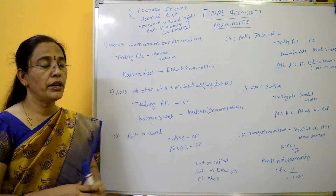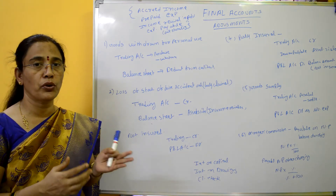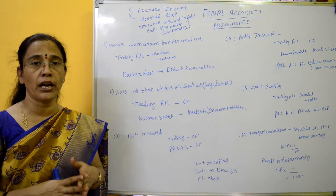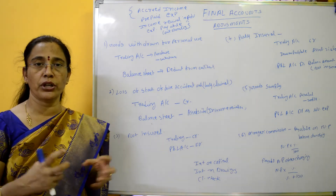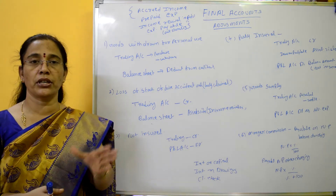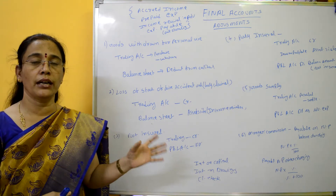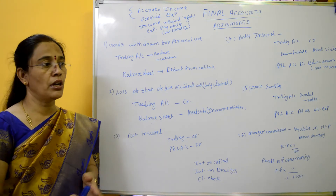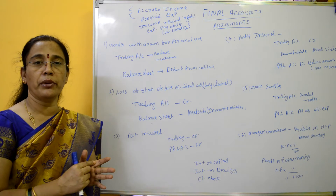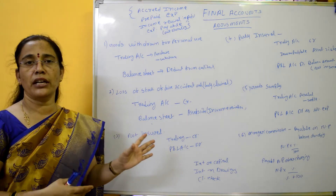Next is manager's commission, payable on profit either before charging or after charging. The net profit is used to calculate the manager's commission. For example, if the net profit is 10,000 and the commission is 10%, we calculate 10,000 multiplied by 10 divided by 100 — that gives the manager's commission.